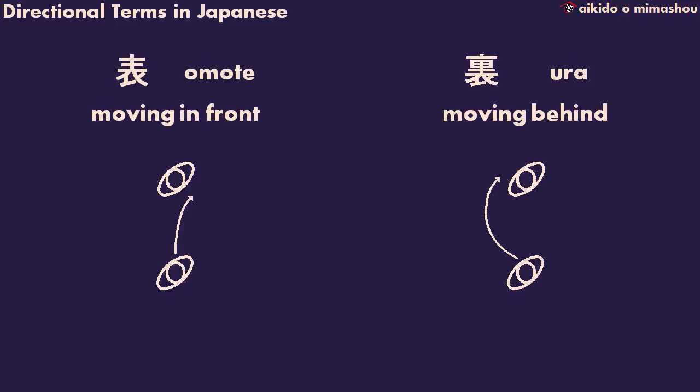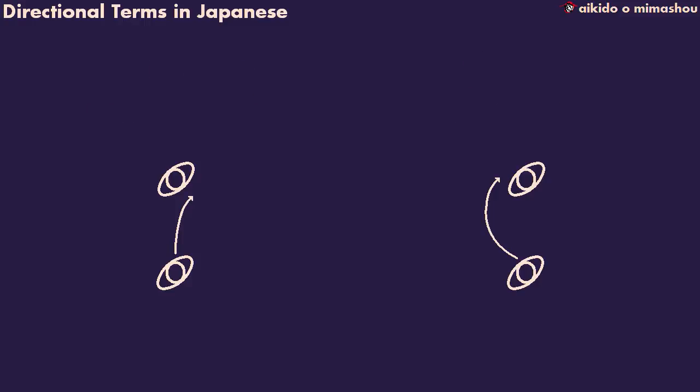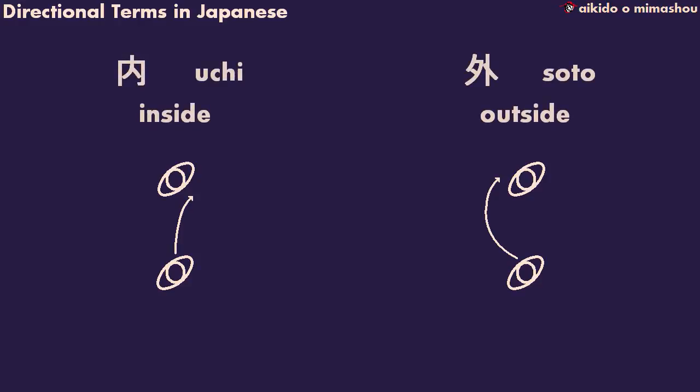It can be important to distinguish whether the technique itself needs to be performed by passing the opponent, or needs to happen by getting around the opponent. This is where two other words are frequently used: u-chi and soto, so-to. These equate to inside or outside, and can help a student understand which direction they need to take to be correct.